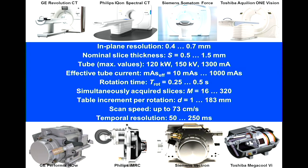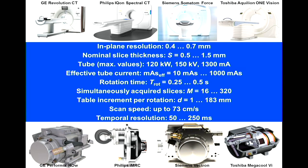Here are some typical figures for CT systems today. We achieve spatial resolution of significantly below half a millimeter, tube power up to 120 kilowatts, and rotation times as fast as 0.25 seconds — with vendors likely moving to 0.2 seconds soon. Scan speeds can reach up to 73 centimeters per second. These numbers, compared to other modalities, are quite impressive.